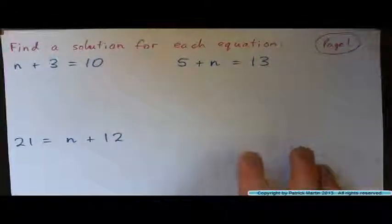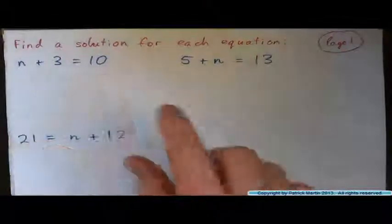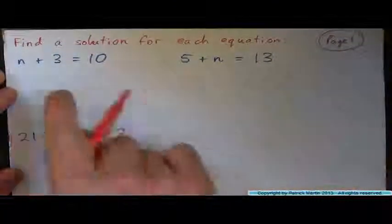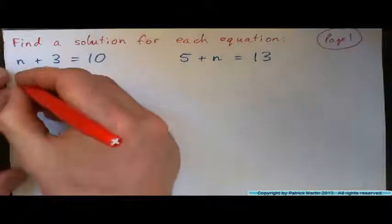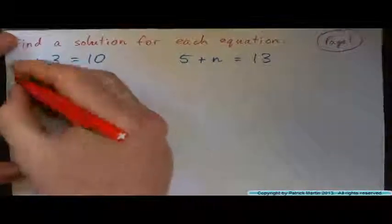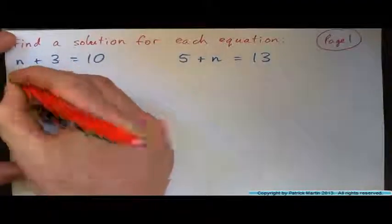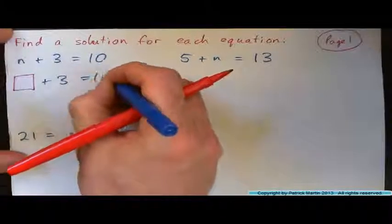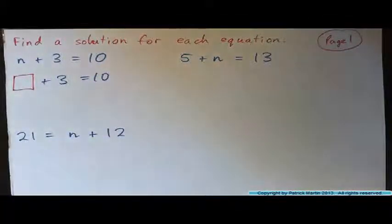So n plus three equals ten, what is the answer? Now what this means is what is n? Remember that the thing about a letter, letters are simply used as placeholders. So it is kind of like saying box plus three equals ten. So what number would you stick in the box to make that equation correct?